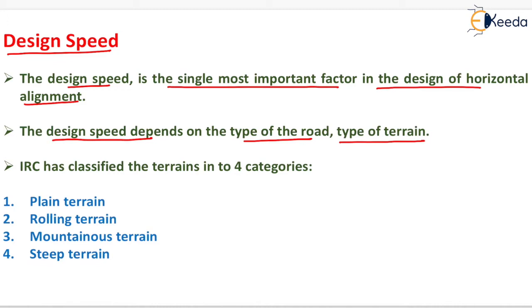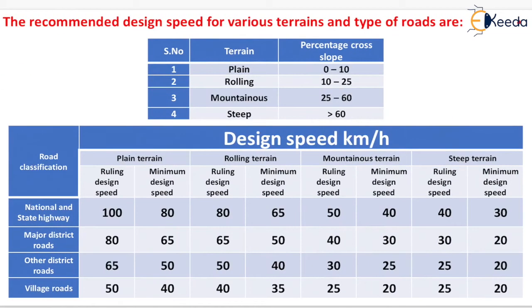As per IRC, terrains are classified into four categories: plane terrain, rolling terrain, mountainous terrain, and steep terrain. The cross slope in percentage for each terrain type is as follows — plane terrain: 0 to 10%, rolling terrain: 10 to 25%, mountainous terrain: 25 to 60%, and steep terrain: greater than 60%.